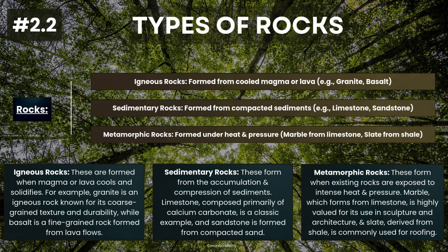Third, metamorphic rocks: when existing rocks are exposed to intense heat and pressure, they change into metamorphic rocks. Marble, which forms from limestone, is highly valued for its use in sculpture and architecture. And slate, derived from shale, is commonly used for roofing. Each rock type has its unique characteristics and uses, which not only reveal the earth's history but also have practical applications in our daily lives.